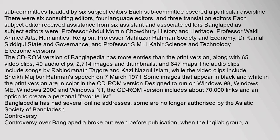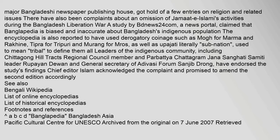Banglopedia has had several online addresses, some no longer authorized by the Asiatic Society of Bangladesh. Controversy over Banglopedia broke out even before publication, when the Inchilab group, a major Bangladeshi newspaper publishing house, obtained a few entries on religion and related issues. There have also been complaints about an omission of Jamaat-e-Islami's activities during the Bangladesh Liberation War. A study by BDNews24.com claimed that Banglopedia is biased and inaccurate about Bangladesh's indigenous population. The encyclopedia is also reported to have used derogatory terms such as 'Moogh' for Marma and Rakhine, 'Tipra' for Tripuri, and 'Marang' for Moroz, as well as 'Upajati' (literally sub-nation, used to mean tribal) to define them. Leaders of the indigenous community endorsed the study's findings, and Chief Editor Islam acknowledged the complaint and promised to amend the second edition.